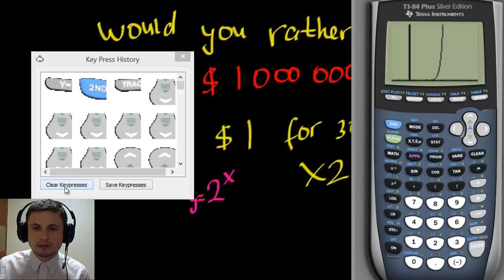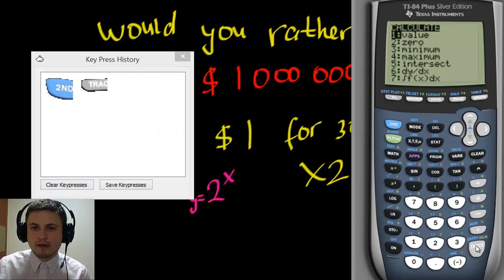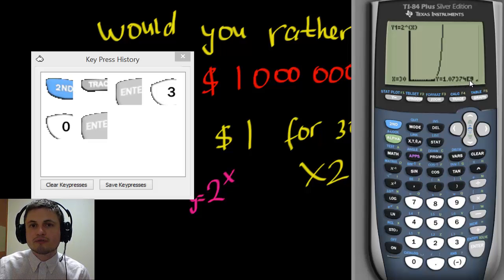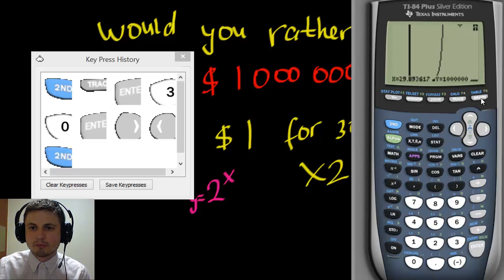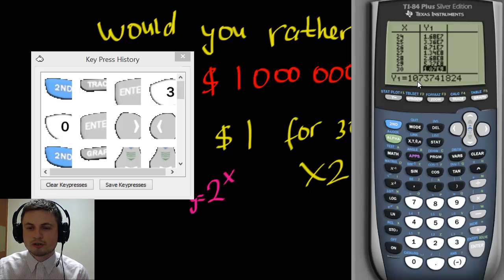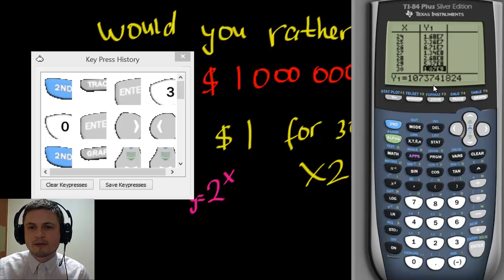Now go to Second Calc, choose Value, and enter x equals 30. It gives the answer in scientific notation: 1.07 times 10 to the power of 9 — that's over a billion. Going back to the table and scrolling to day 30 shows the actual number: just over a million — about one million seventy-three thousand dollars. So waiting a month beats taking a million right away by $73,000.